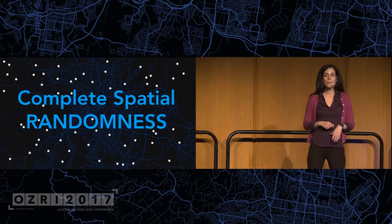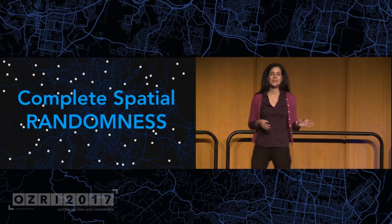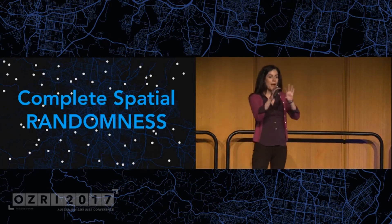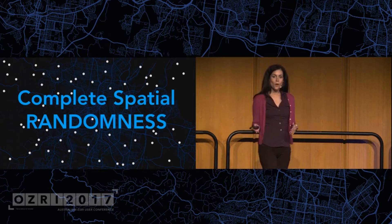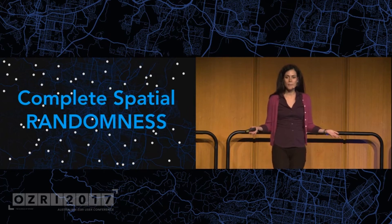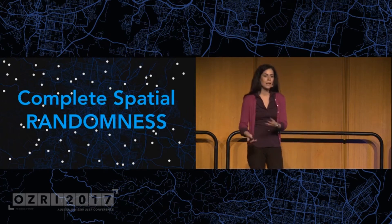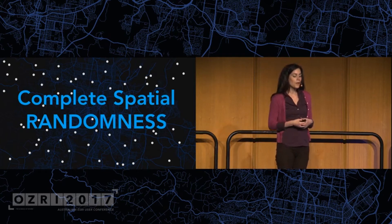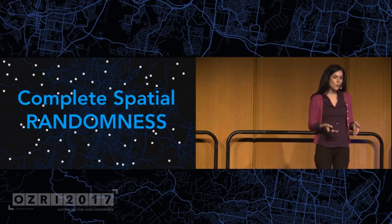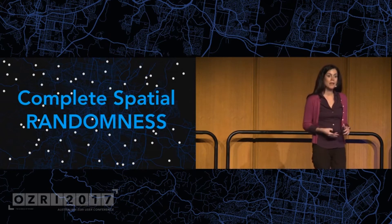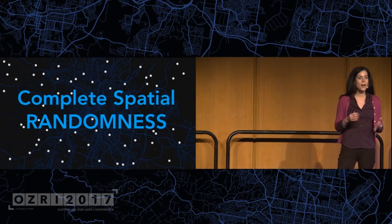The null hypothesis for inferential statistics is always complete spatial randomness. We want to know: is the pattern we're seeing random or not? A random pattern — we can't really do anything about that; it's just random. We could throw a whole bunch of resources at it but it won't change anything because randomness does not have a cause. But if a pattern is not random, then we know there's some underlying process causing that pattern to take place, and we can begin investigating why and perhaps predict where that pattern is going to go in the future.